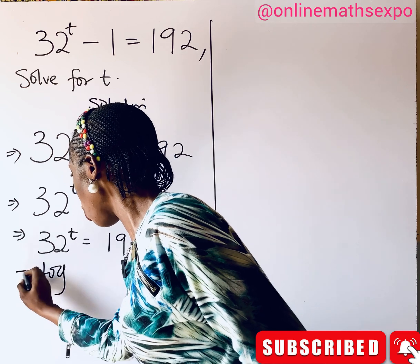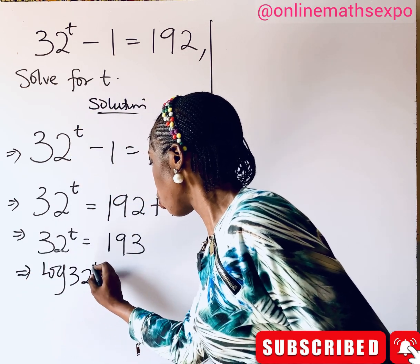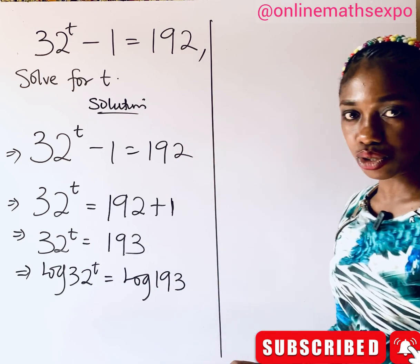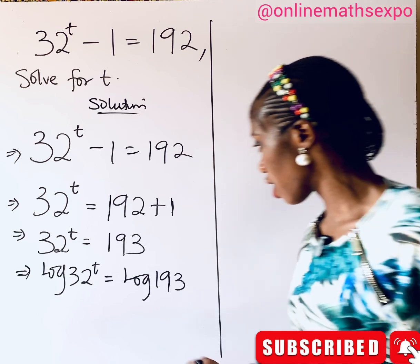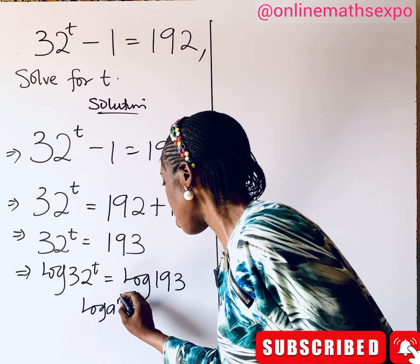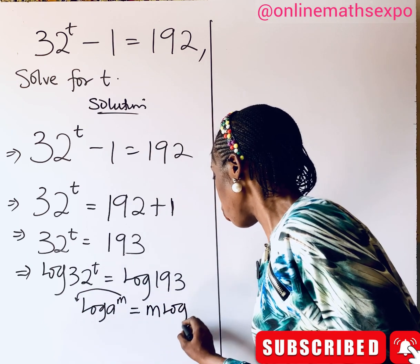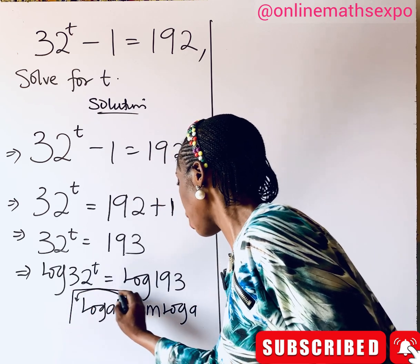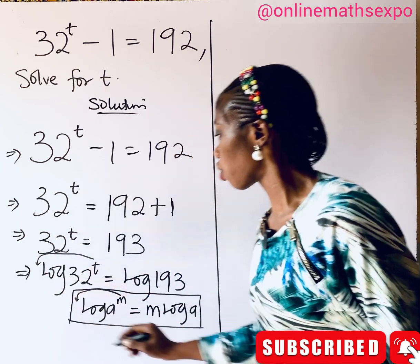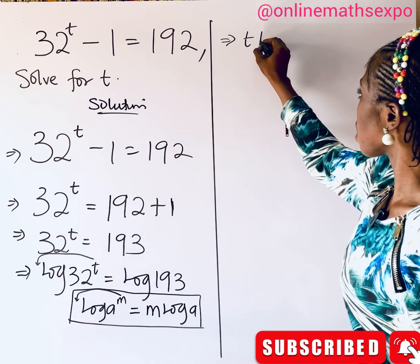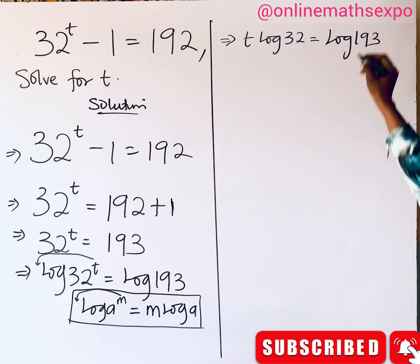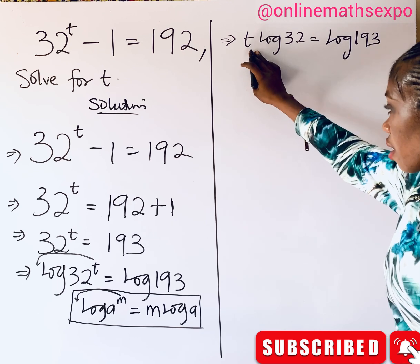To apply logarithms here, we take the log of both sides: log of 32 to the power of t equals log of 193. Remember the rule of logarithms which says log of a to the power of m is the same as m times log a. Applying this rule, the t comes down to multiply, giving us: t log 32 equals log 193.